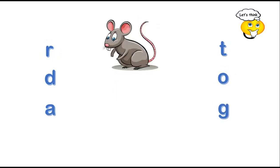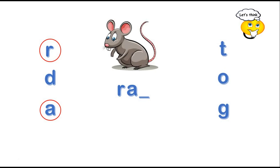Look at this one. R is here. R is the sound. A. This letter is missing. Let's think. T is missing. Yes, T. What's the word? Rat.